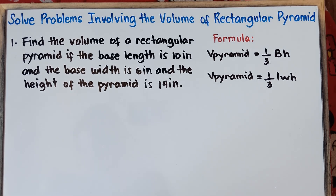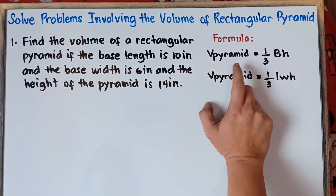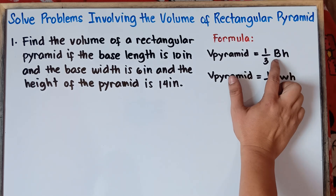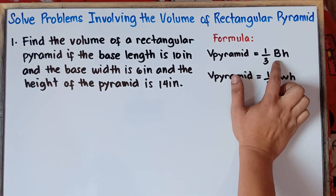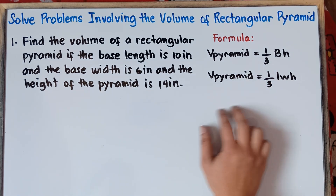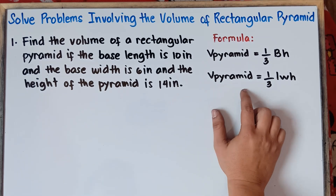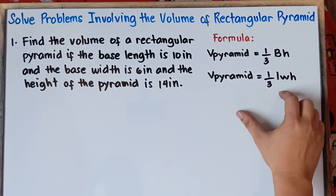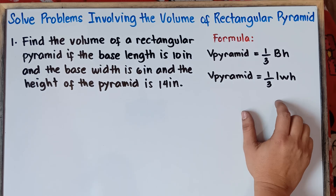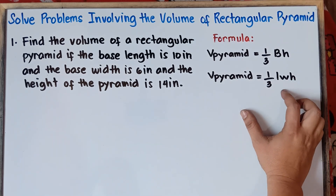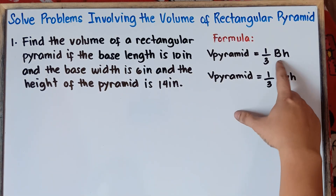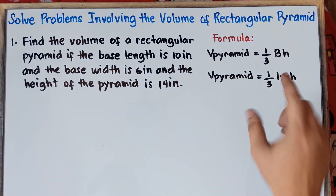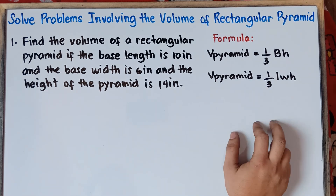This will be the formula for finding the volume of a pyramid. The volume of a pyramid is equal to one-third multiplied by the area of the base — this capital B stands for the area of the base — times the height. Or you can also apply: volume equals one-third times the length times the width times the height. These two formulas are just the same. If you have the area of the base and the height, use the first formula. If you have length, width, and height, use the second formula.